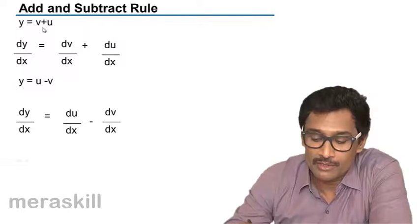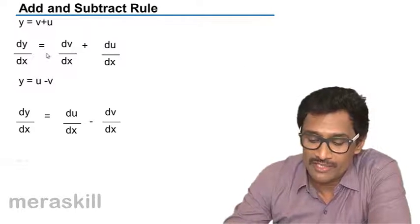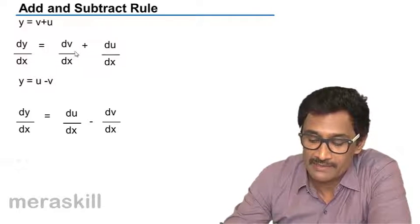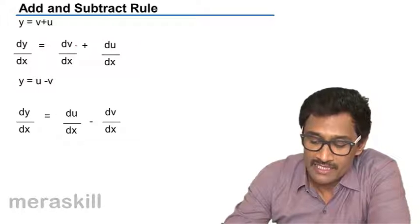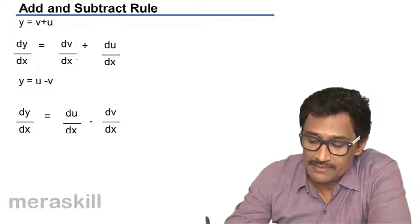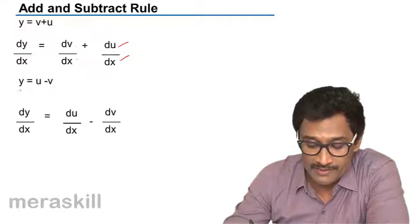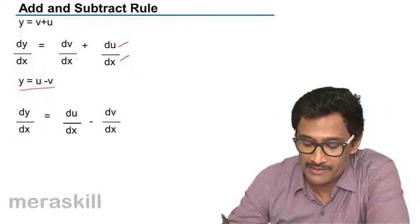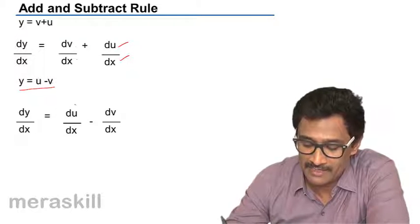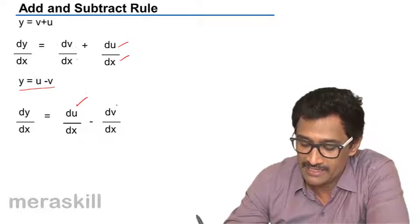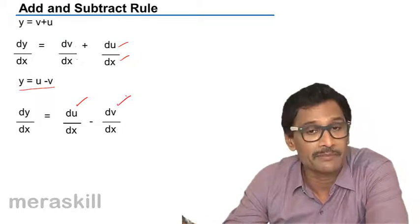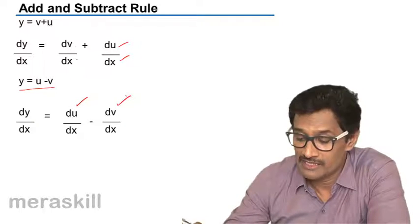So we have: suppose y is equal to u plus v, then dy by dx is du by dx plus dv by dx. Suppose y is equal to u minus v, then dy by dx is du by dx minus dv by dx.